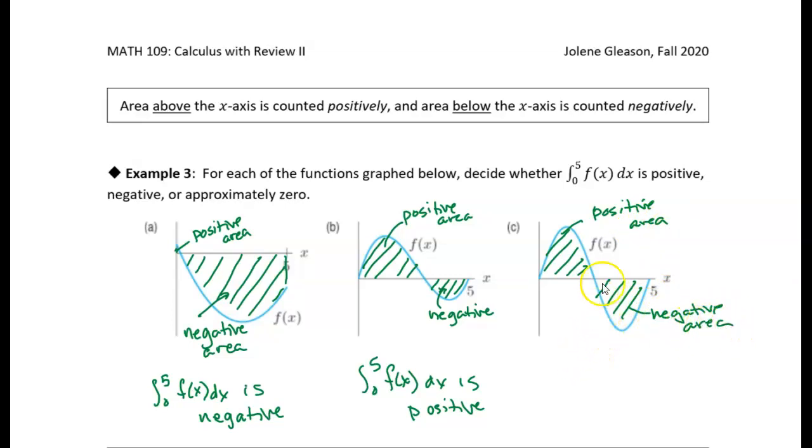But as far as we can tell, they appear to be pretty much the same. You know, there's just as much positive area as negative area. So what I would say is that this integral of this function, this f(x) function, is approximately zero. It's as close to zero as I can tell. We really don't have any way to determine whether the negative area is bigger or the positive area is bigger.